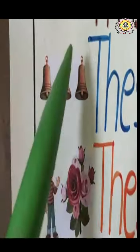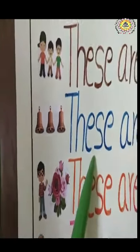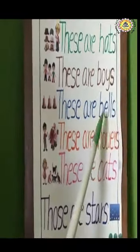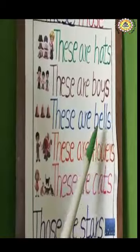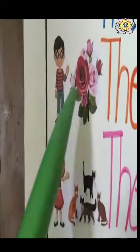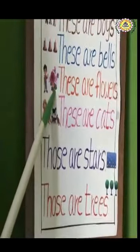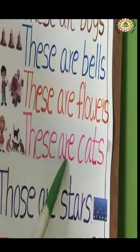Look at this picture, children. How many bells are there? One, two, three. All these bells are near. So here also, we have to use 'these'. These are bells. What are these? These are bells. Next example — look at this boy and look at these flowers. So many flowers are there and these flowers are near to this boy. That's why: these are flowers. What are these? These are cats — all these cats are near to this girl. So, these are cats.